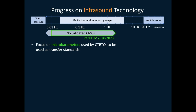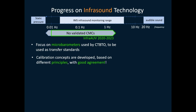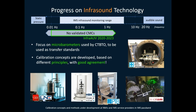But now we need to cover the part in between. For our applications we use microbarometers, which are quite different devices from microphones, meaning we need new methods to calibrate them so they can be used as transfer standards. Calibration concepts are being developed based on different principles by many NMIs and IMS service providers. Through the cooperation within the InfraAUV project, several comparisons are already being organized that show good agreement among all these principles and concepts of calibration. This gives good hope to quickly have CMCs covering the part of the range that is currently not covered.